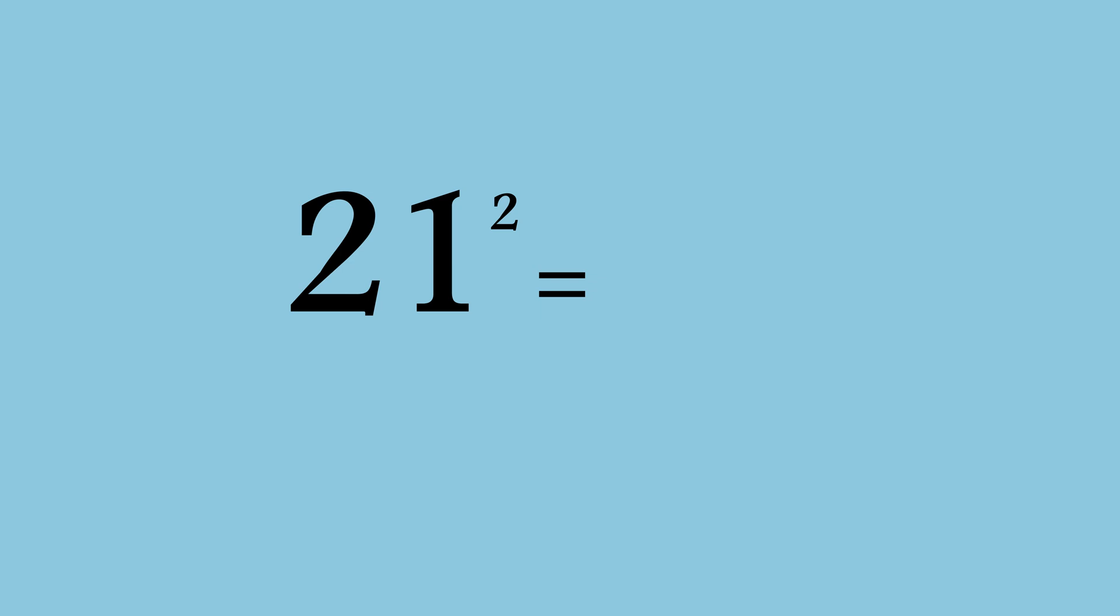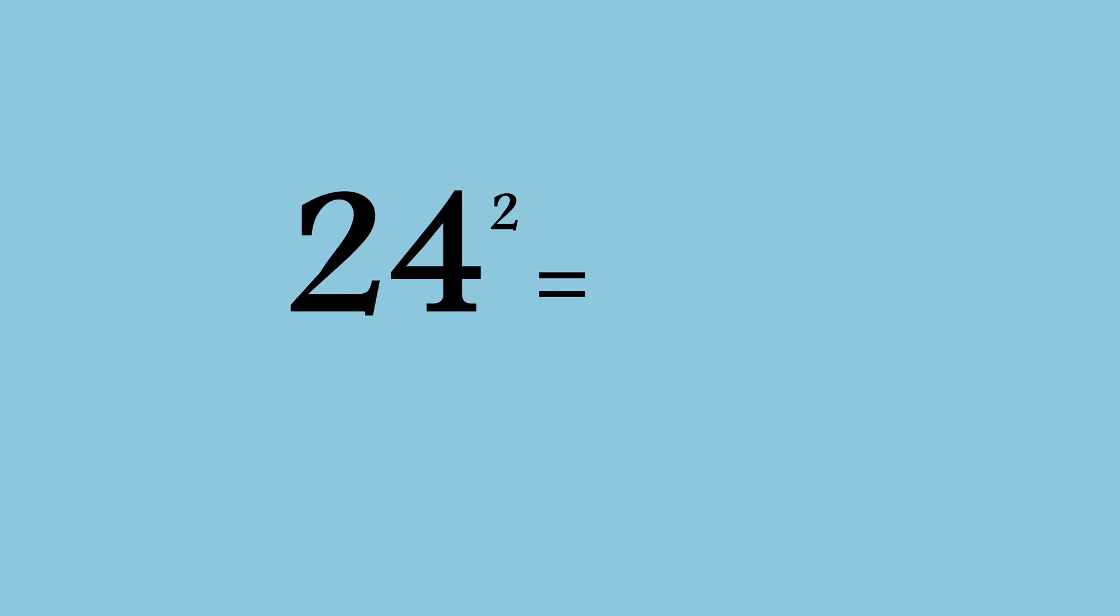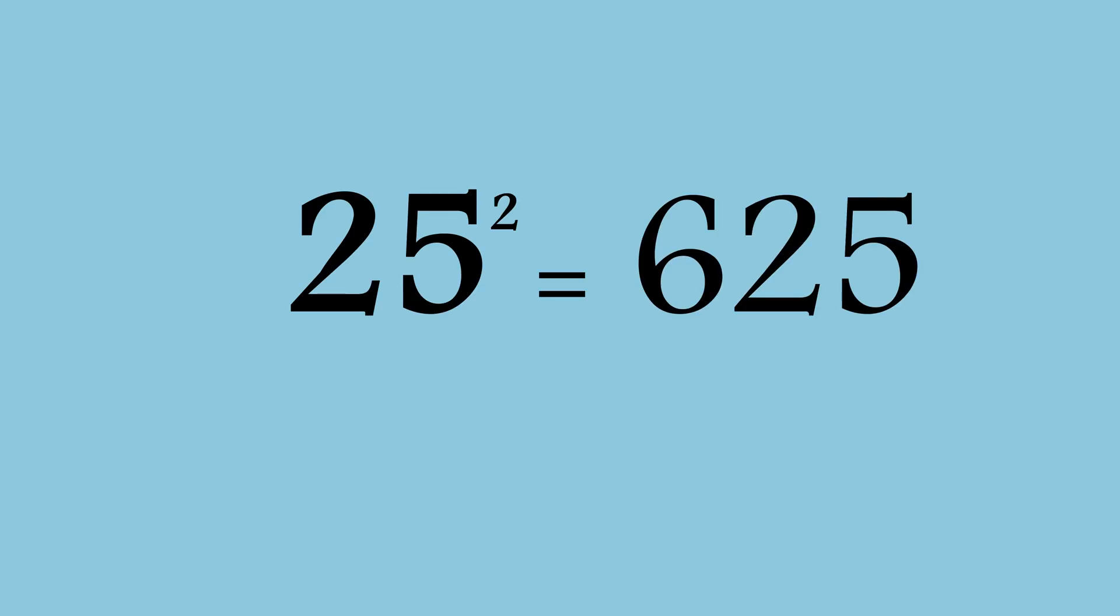21 square is 441. 22 square is 484. 23 square is 529. 24 square is 576. 25 square is 625.